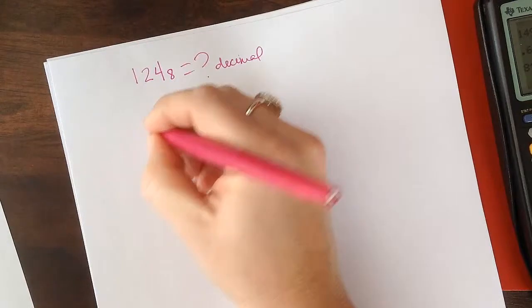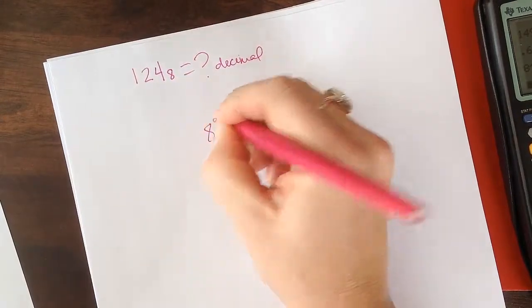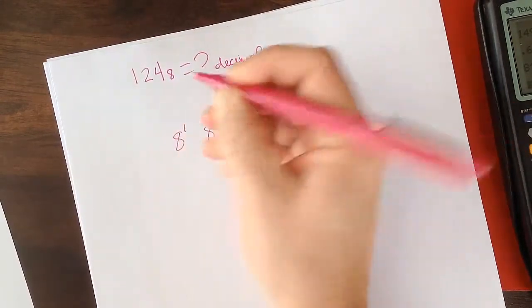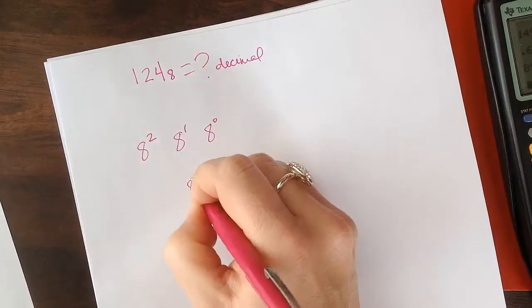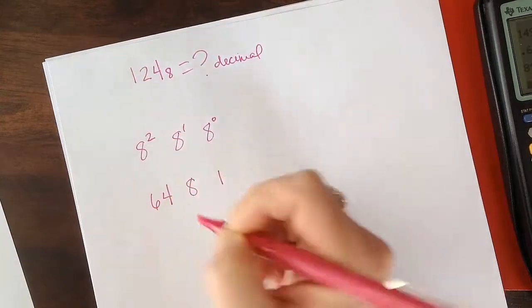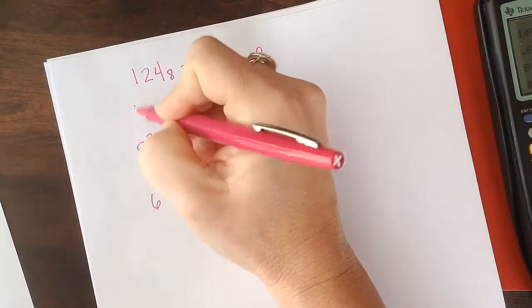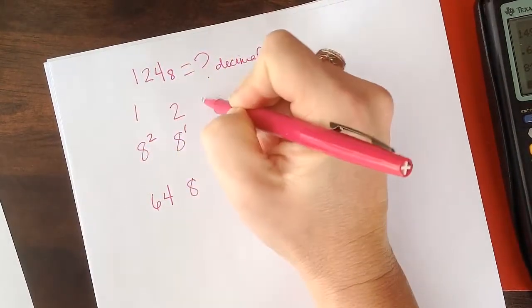So we have 8 to the 0, 8 to the 1, 8 squared. So this is going to be 1, this is going to be 8, this is going to be 64. So we have 1, a 2, and a 4.